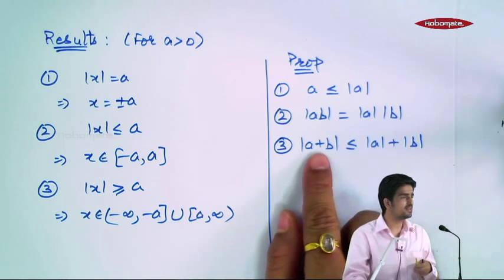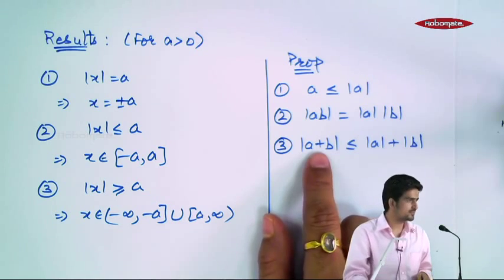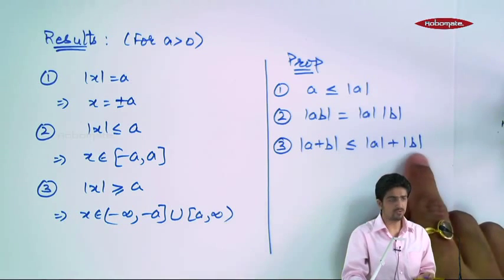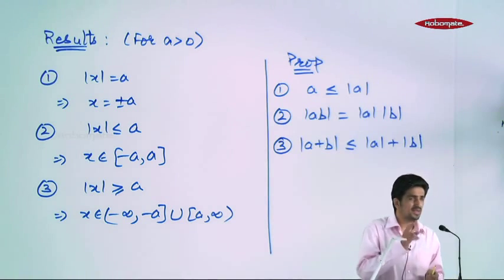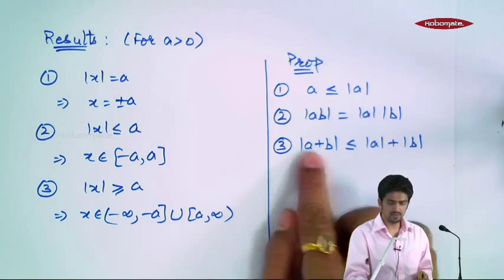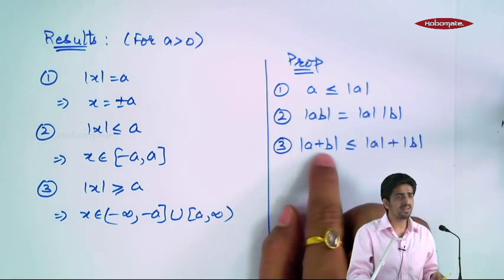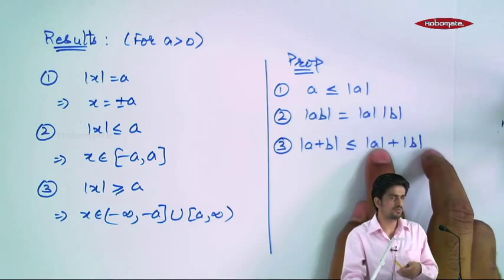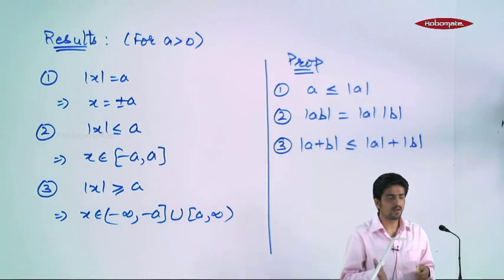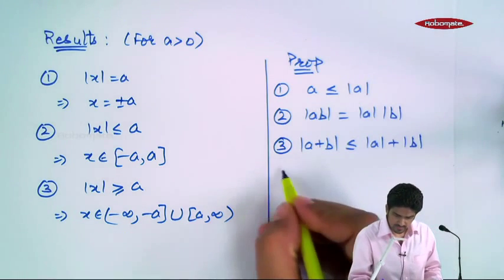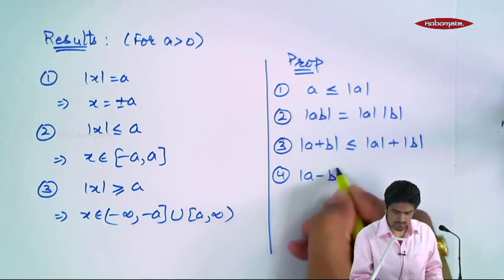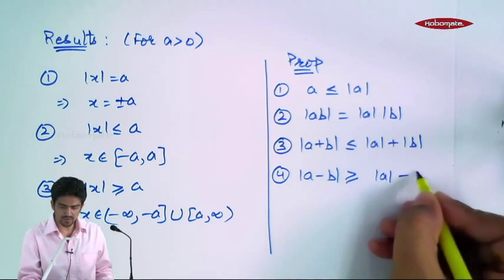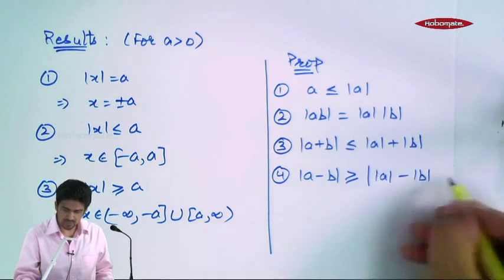A plus b ka mod is less than equal to mod a plus mod b. Agar a aur b ka sign same hai, maan lijiye dono positive hain — 5 and 6 — plus kiya 11, magnitude bhi 11. Magnitude of 5 is 5, magnitude of 6 is 6, sum karke 11 — barabar aa gaye. But agar a aur b ka sign opposite hai — maan lijiye a hai 5 aur b hai minus 6 — yeh banega minus 1 ka mod, yaani ki 1, jabki 5 aur 6 ka sum 11 hoga. Toh certainly less than equal to. Equal aega agar sign same, less aega agar sign opposite. Similarly, magnitude of a minus b is greater than equal to magnitude of a minus magnitude of b.